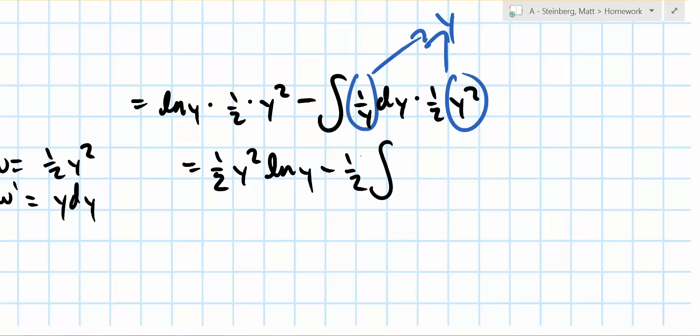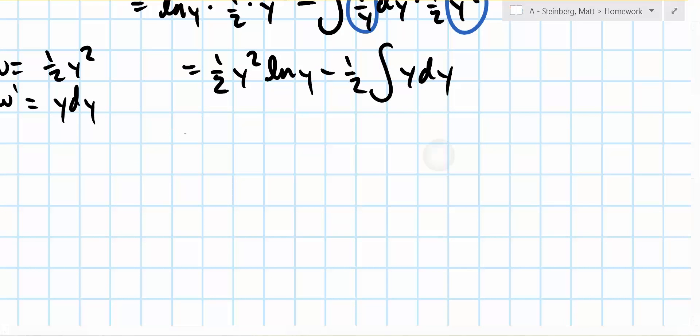So this ends up as 1 half the integral of y dy and we know what that is. So we have the integral of that right there is 1 half y squared plus c.